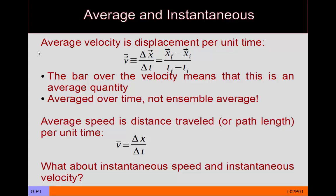Note that this is averaged over time, not an ensemble average. If you want to find the average velocity during a time interval, you don't take all the different velocities the object has during that interval, add them together, and divide by the number. Rather, you take the final position, subtract the initial position, and divide by the time — just as the equation shows. This is also true for average speed, which is distance over time.